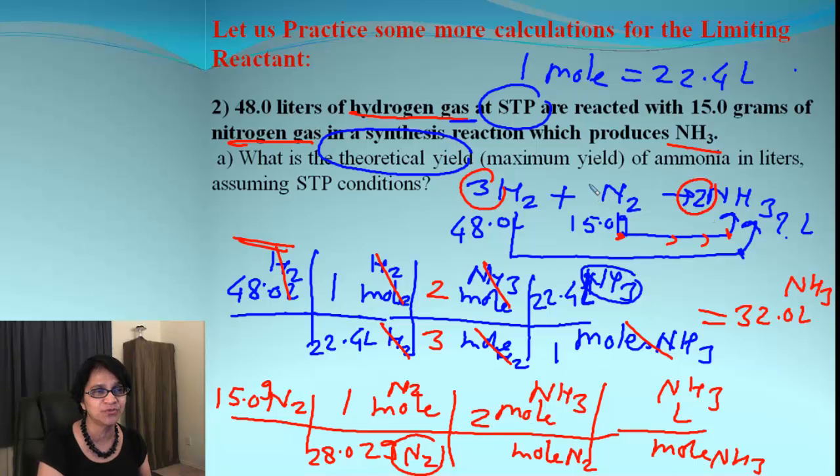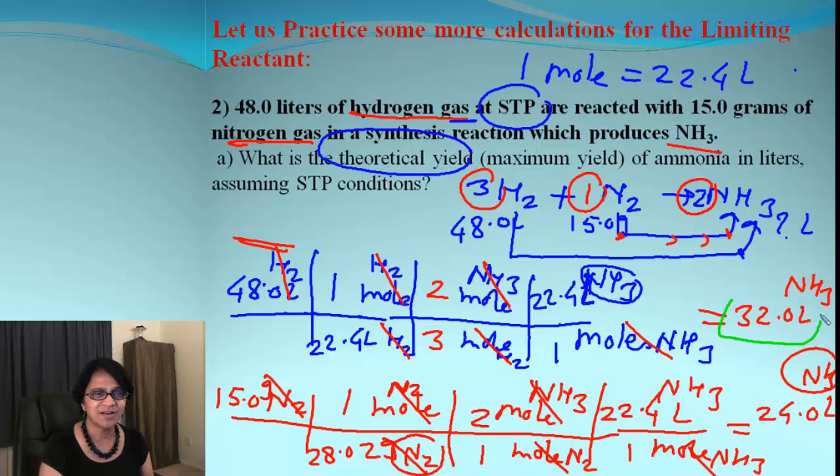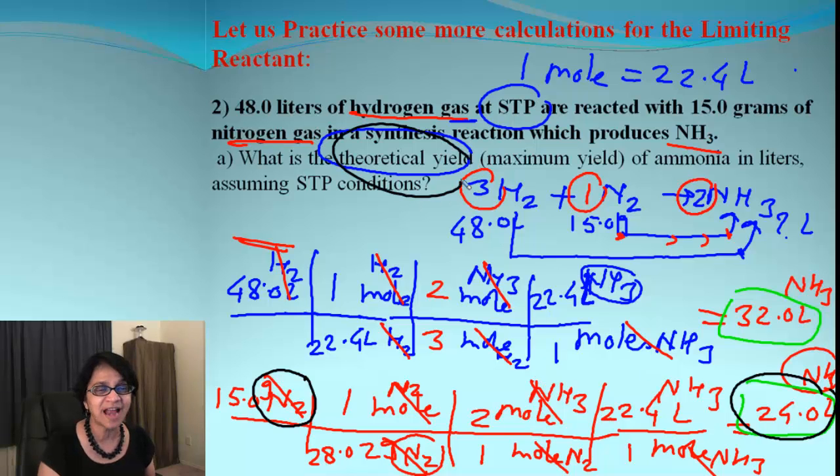And again here, we go from moles to liters which is 22.4. So we basically cancel the units and multiply the numbers. And the answer which we are getting here is 24.0 liters of ammonia. So out of these two numbers, we have 24.0 liters as the minimum value. That means our beginning point which is nitrogen, that is the limiting reactant. And the theoretical yield is 24.0 liters.